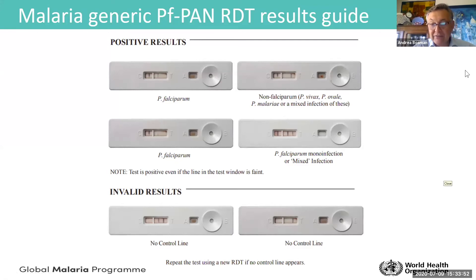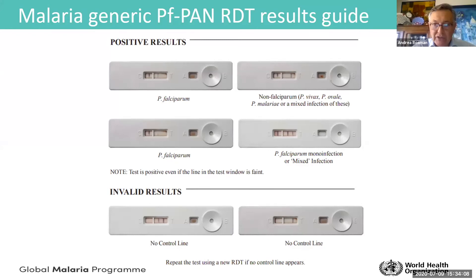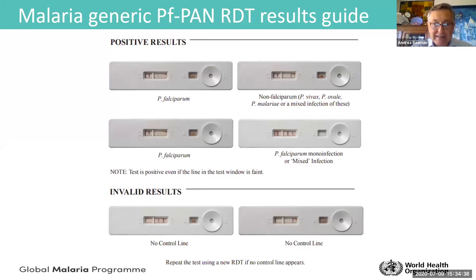This is very confusing for health workers — how can they differentiate falciparum from mixed infection? Unfortunately, the PF-PAN test cannot make this distinction. If you have a PF-PV test, which some countries use, it is very clear: two lines mean one for PF and one for PV. The PF-PV test will miss some ovale and malariae, but these are very rare infections and generally not a major public health concern.